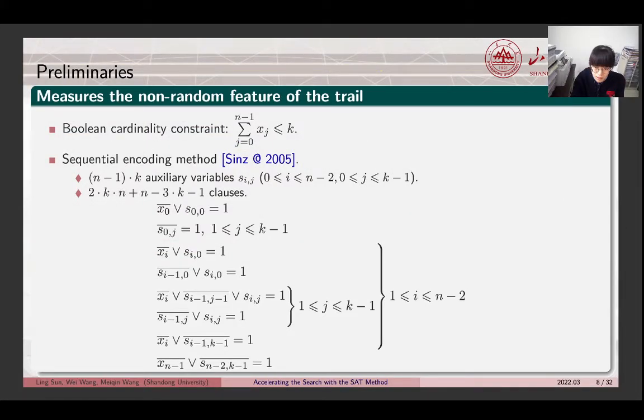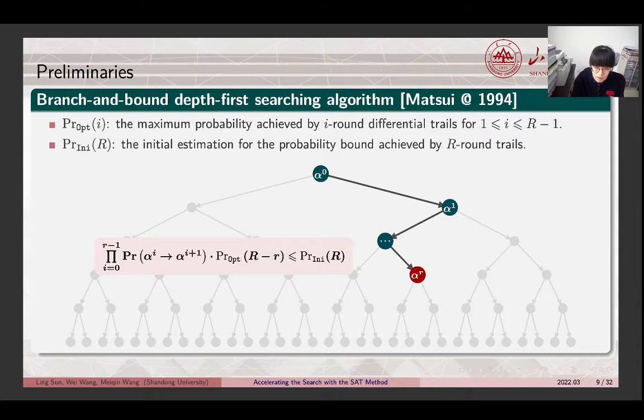Then, the second group of clauses characterizes the non-random feature of the trail. According to the specific goal, we should restrict the number of active S-boxes, the differential probability, or the linear correlation in the distinguisher searching problem. All these kinds of constraints can be abstracted as Boolean cardinality constraint. This constraint can be converted into CNF formulas with the sequential encoding method. About n multiply k auxiliary variables should be introduced, and the number of clauses is also about n multiply k.